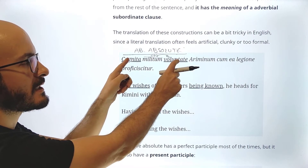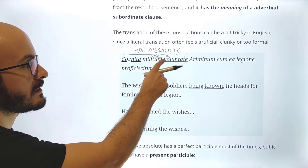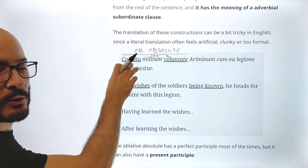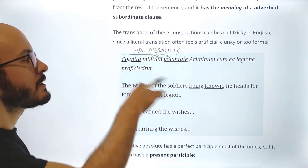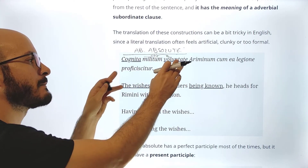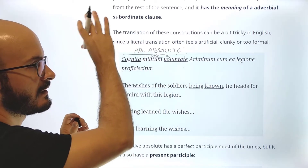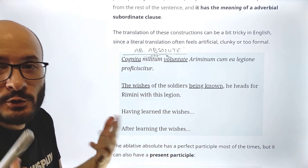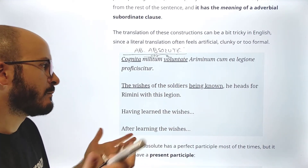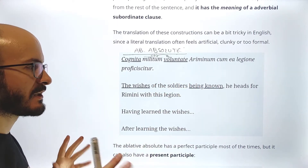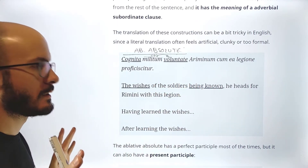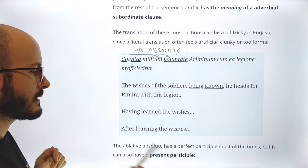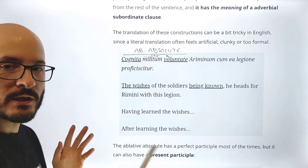Inside the ablative absolute, if a word refers to the noun we can mark it, and if the participle has a complement we can mark that too. But we don't say this is the subject and this is the verb — just ablative absolute. The literal translation is 'the wishes of the soldiers being known,' but that sounds artificial. We could also say 'having learned the wishes of the soldiers' or 'after learning the wishes of the soldiers,' etc.